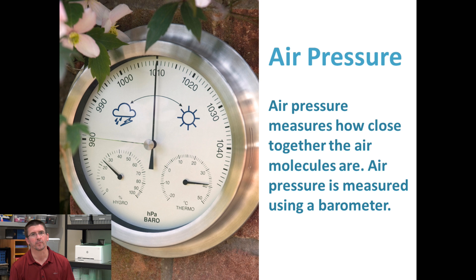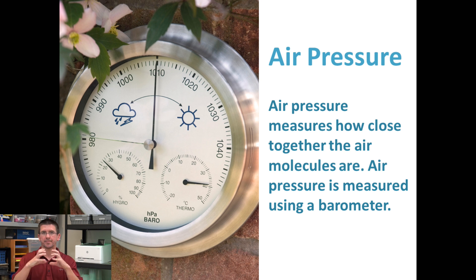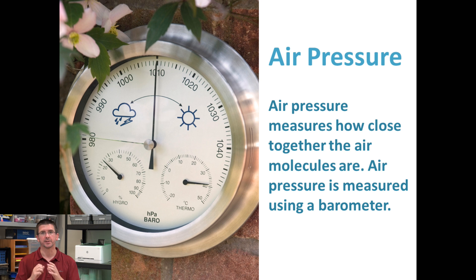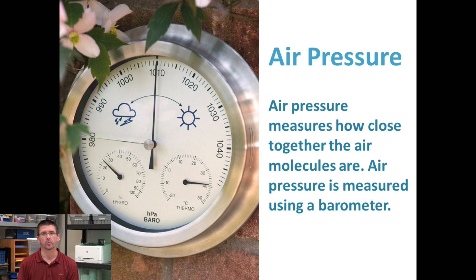The second factor of weather we can look at is air pressure, which is simply a measurement of how tightly packed together the air molecules are. When air gets warmer, just like most substances, the molecules tend to spread out; when it gets cooler, they press together. That can be a good predictor of what sort of weather we might have on a given day. A barometer is the device we use to take our air pressure measurements.